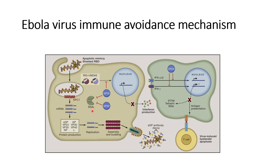VP35 also suppresses the translation of RIG-I and MDA5, which prevents the formation of interferon. Since interferon production is reduced, it reduces the innate immune response, as the probability of signaling to other cells is diminished.